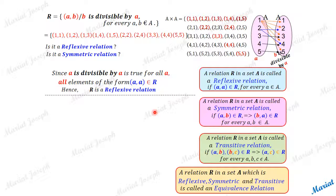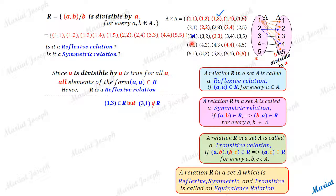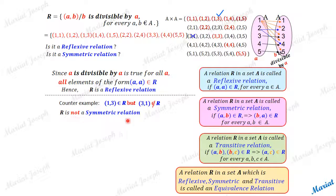Let's check whether it is a symmetric relation. Take the pair (2,4) — it belongs to R. But we cannot find (4,2) in it. Even (1,3) is there, but (3,1) is not included, because 1 divisible by 3 is not a correct statement. This acts as a counter example, so this relation is not a symmetric relation.